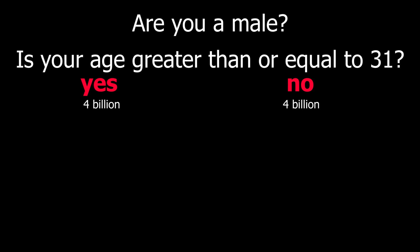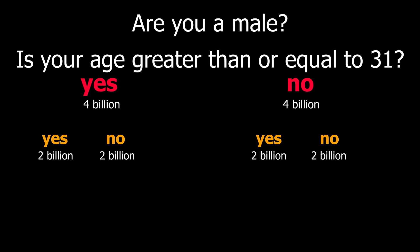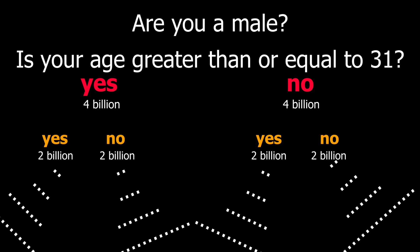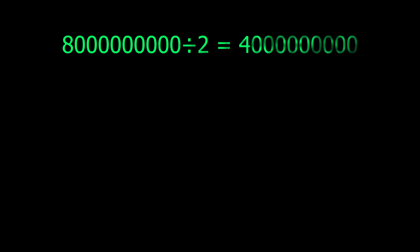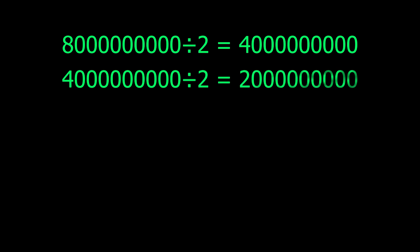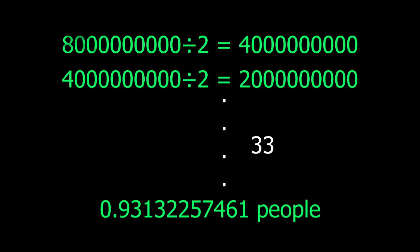Is your age greater than or equal to 31? With this question, we can narrow down the 4 billion to 2 billion. Now if you could ask such a question that would divide the population in half each time, we would need a maximum of 33 questions to narrow it down to just one specific person in this world. This is possible because every time we ask a question, we divide the population by 2, and after 33 divisions, it becomes less than 1.